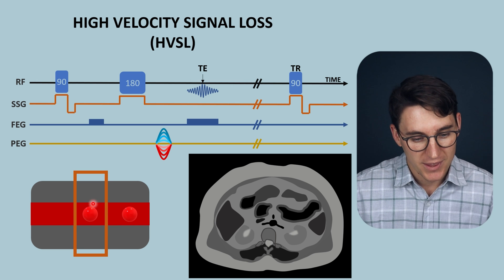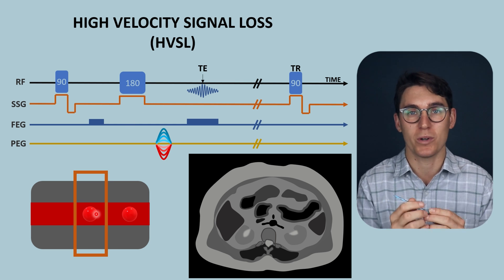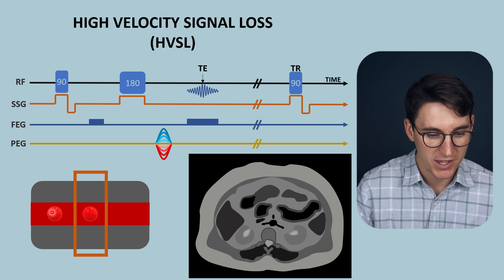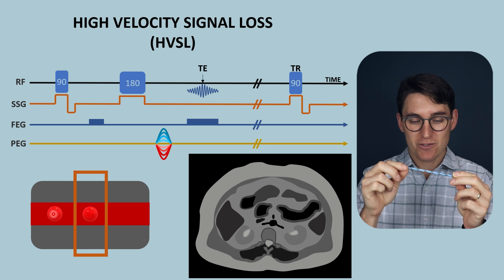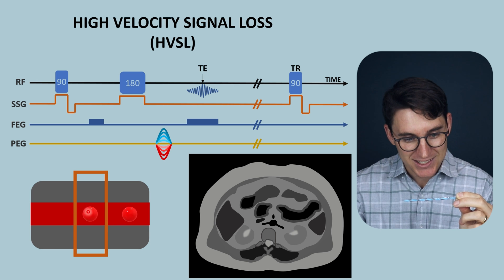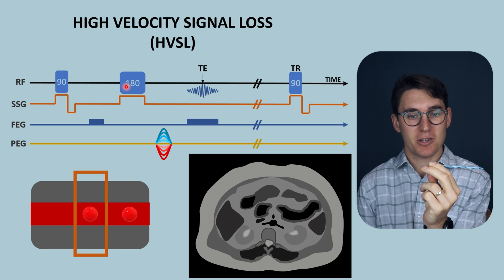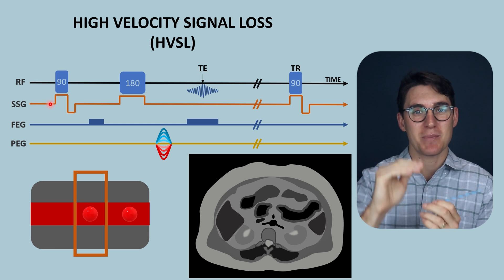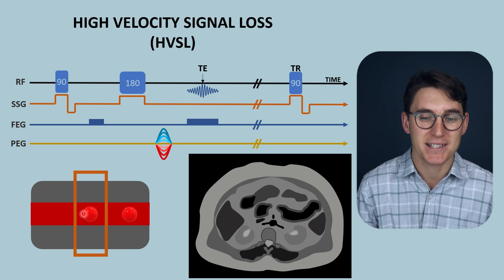The blood that has entered the slice is going to receive the 180° RF pulse — it's slice selected, it now has the right frequency. It's going to flip its magnetization vector 180°. But what magnetization vector does this spin have? Initially during the 90° RF pulse, this tissue outside the slice doesn't get any transverse magnetization — it remains in the longitudinal plane. The blood then enters the slice and receives the 180° RF pulse; it is still parallel to the main magnetic field. There is no transverse magnetization — it's never received that 90° RF pulse. What's giving us signal is the transverse magnetization as well as how in-phase those spins are. This blood has got no transverse magnetization, so it's not going to give any signal. That is the basis for high velocity signal loss.